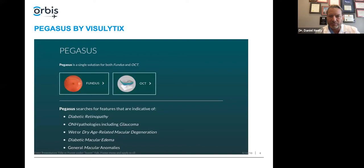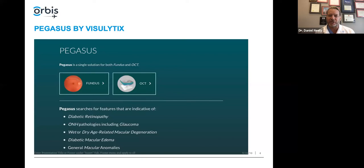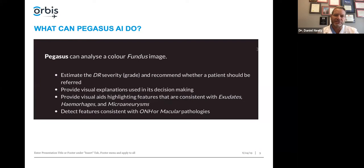Pegasus can utilize both fundus color images as well as OCT images. It's designed to analyze these images for hallmarks of diabetic retinopathy, optic nerve anomalies, macular anomalies, macular edema, and age-related macular degeneration. It scans these images and highlights abnormalities. In the process of analyzing for abnormalities, it provides an estimate of the diabetic retinopathy severity scale, highlighting where those features are so you can see what that estimate is based upon.